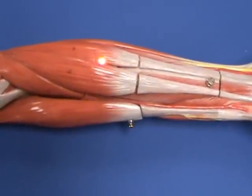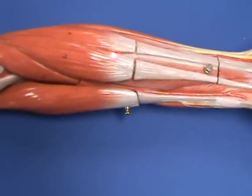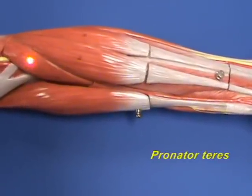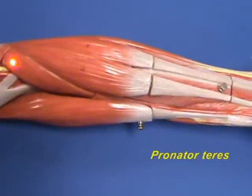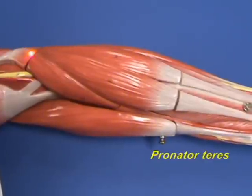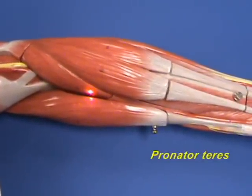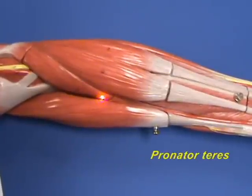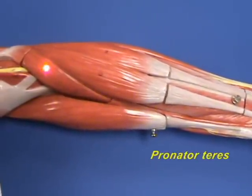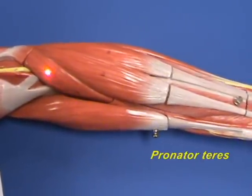We will consider the muscles of the anterior compartment of the forearm, first looking at the pronator teres muscle. The pronator teres muscle has an origin on the medial epicondyle of the humerus and on the medial side of the ulna, and inserts on the lateral side of the midshaft of the radius. The pronator teres, as its name implies, is a pronator of the forearm.